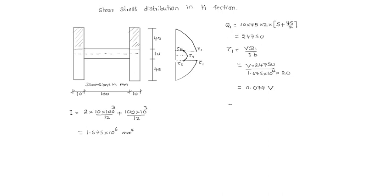Then tau2 — the VQ is the same, but the width has changed. So tau2 equals V into 24,750 in the horizontal member, divided by 1.675 into 10 power 6, and now the total width is 120. That equals 4.43 into 10 power minus 3, V. That is tau2 — it is 1/6 of tau1 times 6, so it changes by the width ratio.